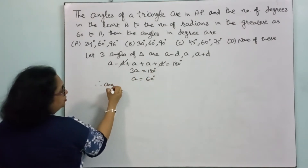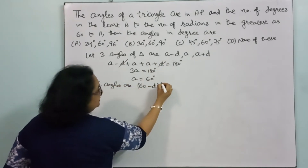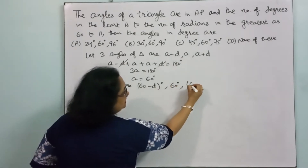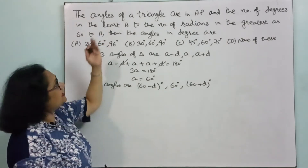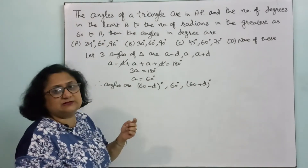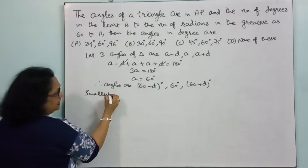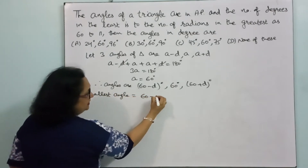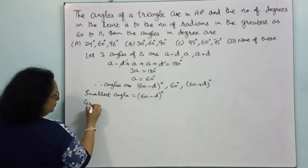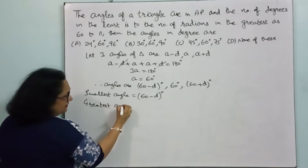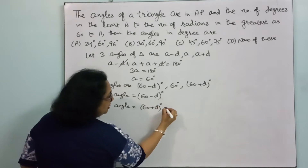Therefore the angles are: 60 minus d degrees, 60 degrees, and 60 plus d degrees. Now according to the given condition, the smallest least angle should be in degrees — smallest angle is 60 minus d degrees, which is already in degrees. The greatest angle is 60 plus d degrees, but we need to convert it to radians as the question requires.